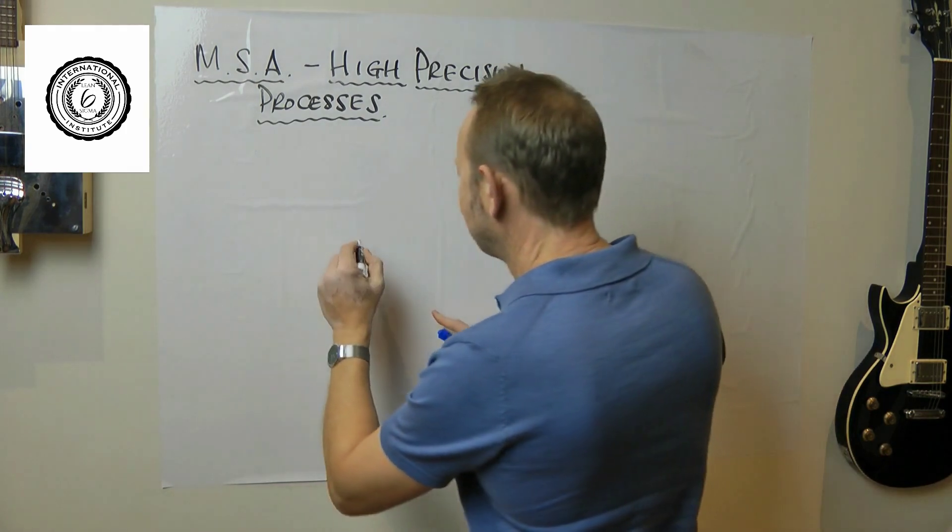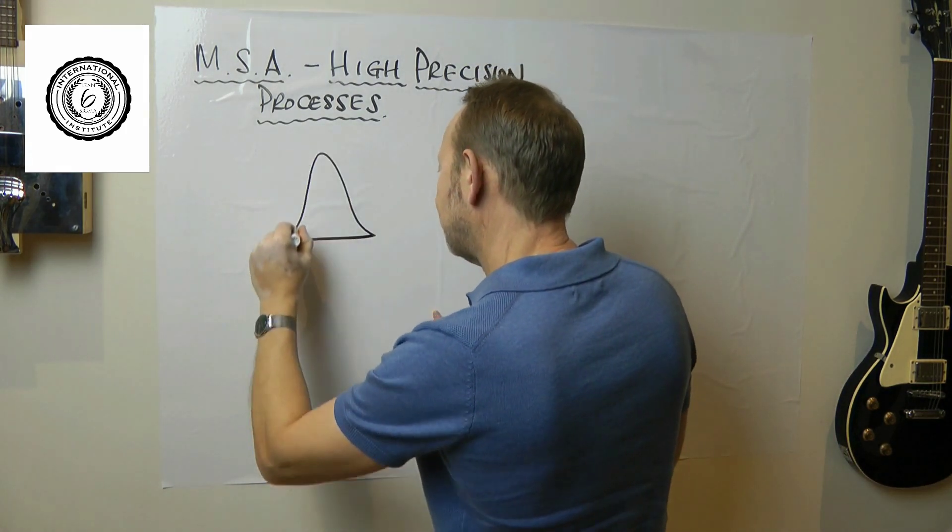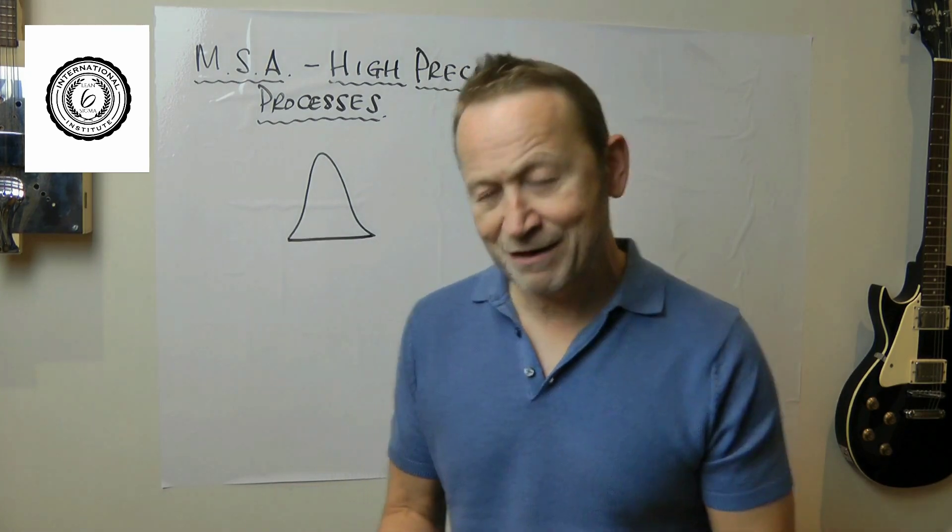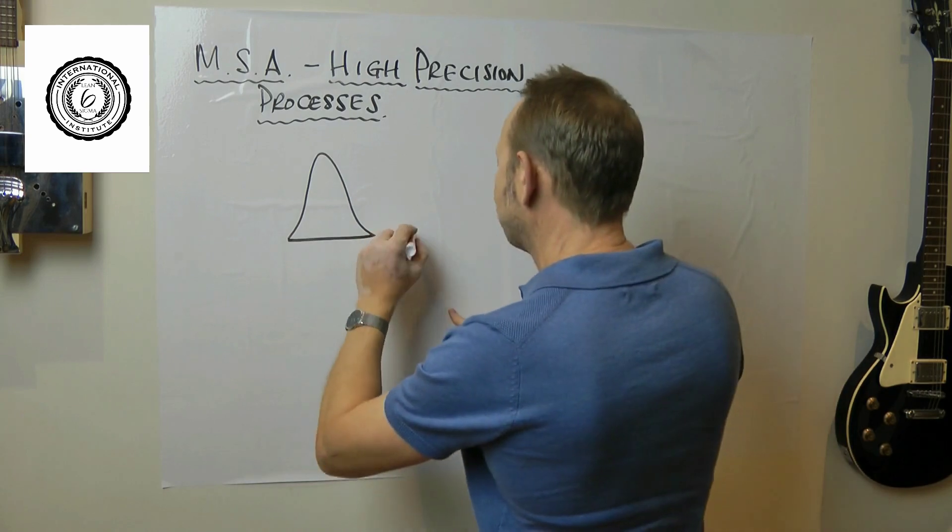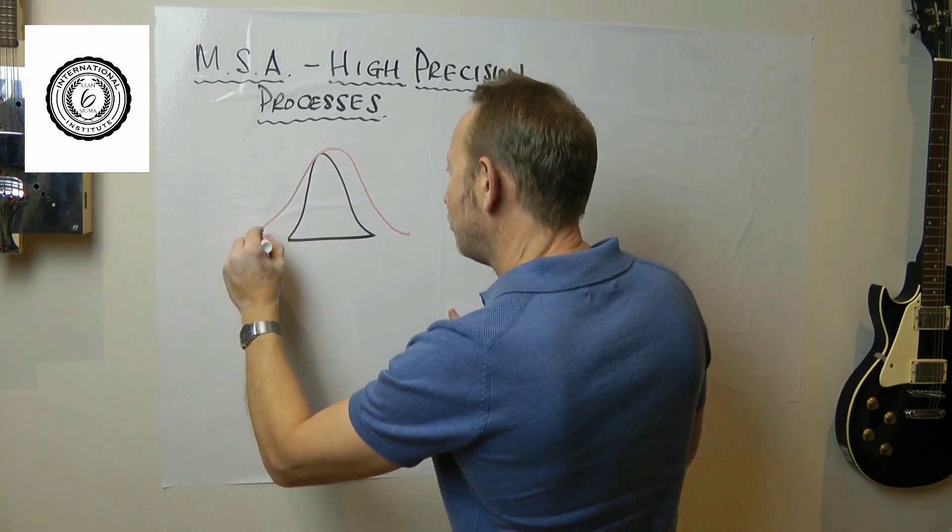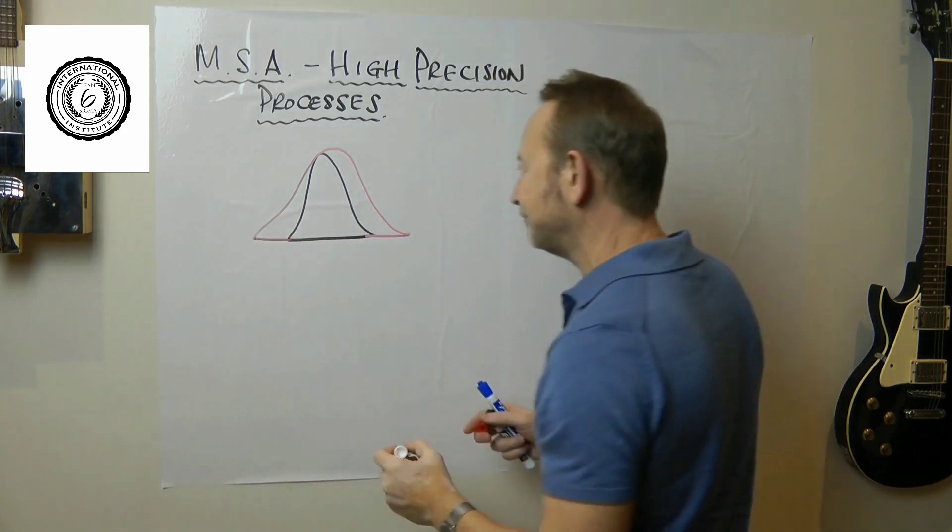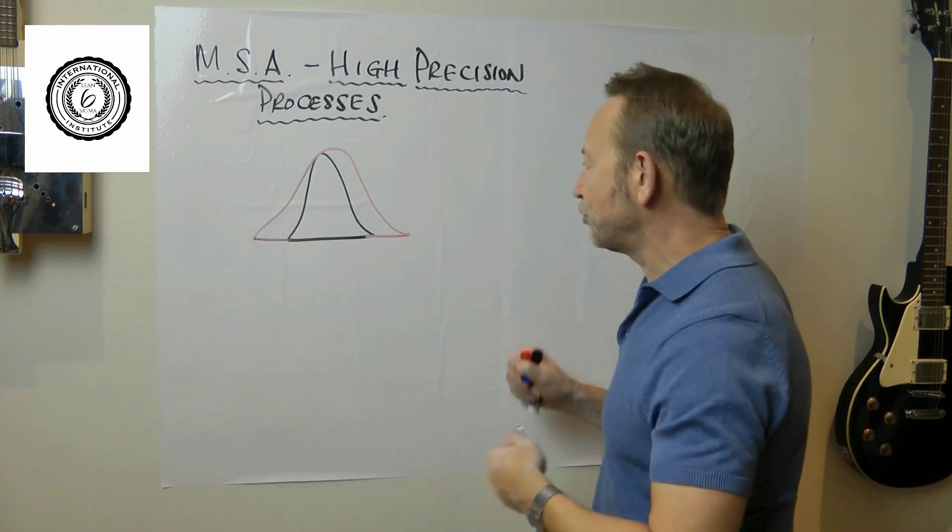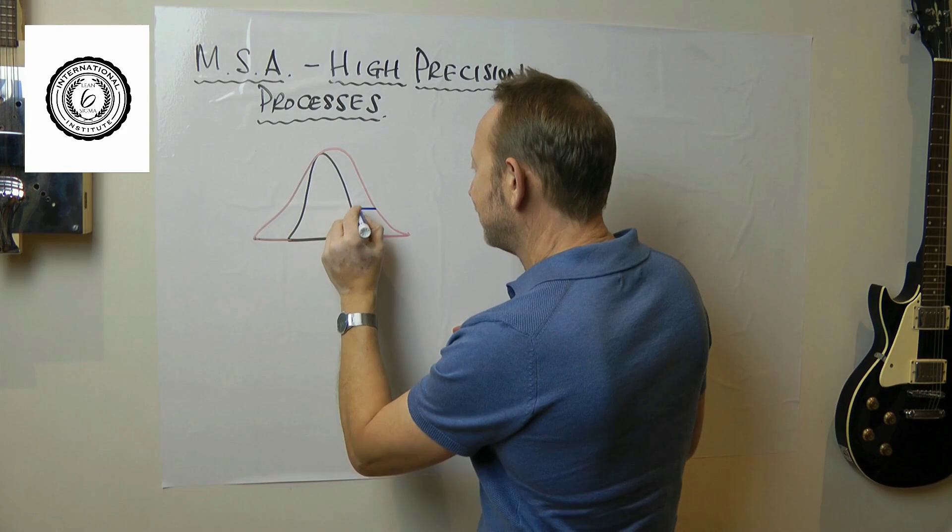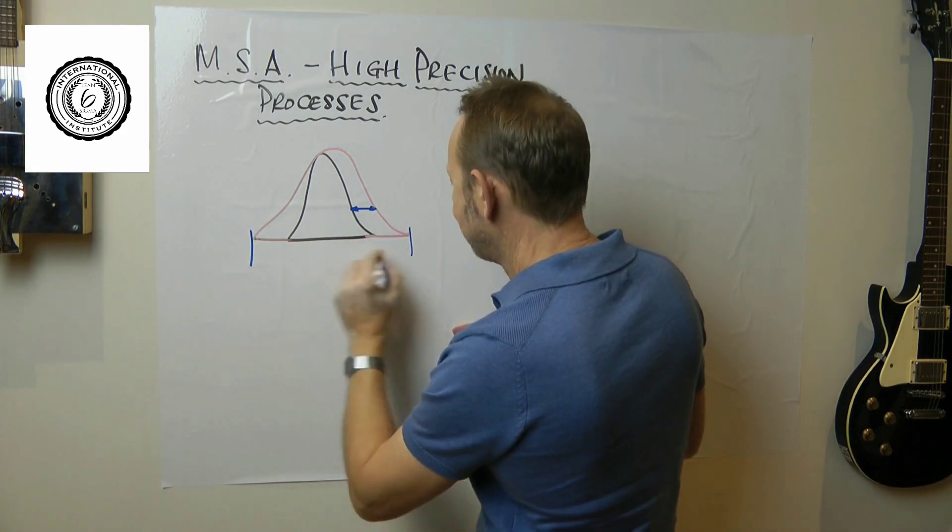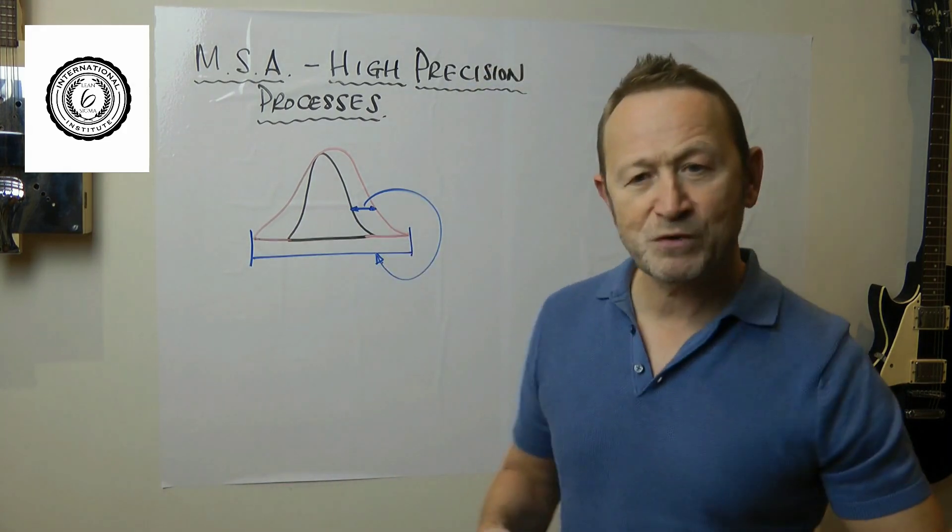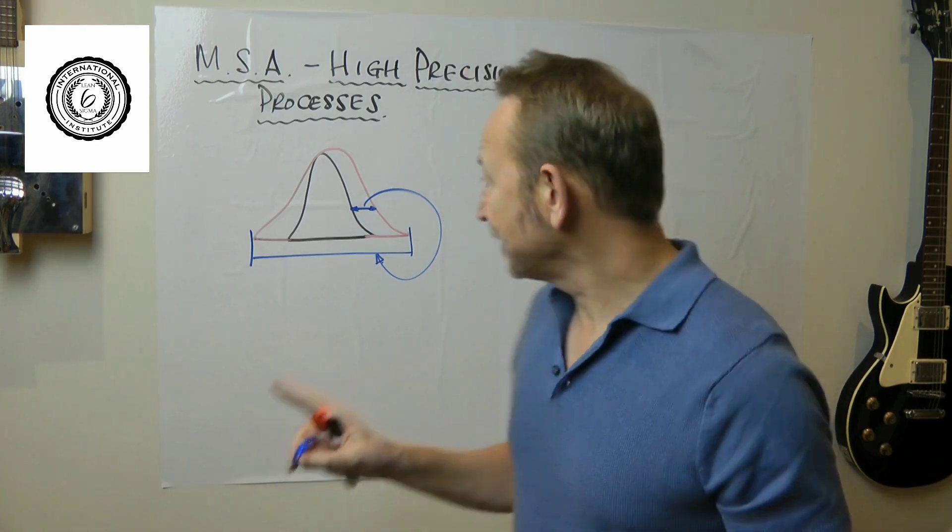Let's think about what's going on. Essentially with MSA you have the underlying process, the variability from the manufacturing process itself, and then of course the measurement error adds variability on top of that. So the measurement error always makes the distribution look bigger. Then when we work out the statistics, precision to total for example, what it does is it looks at how big this is, it looks at how wide that is, and it divides that error into the total. It's a ratio.